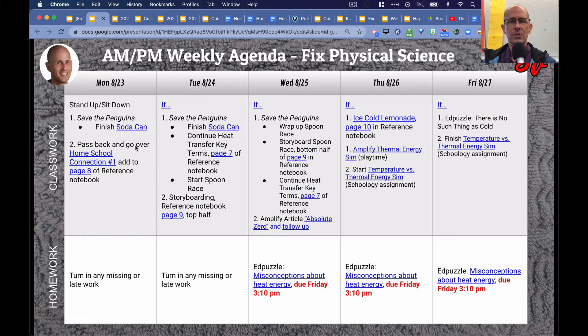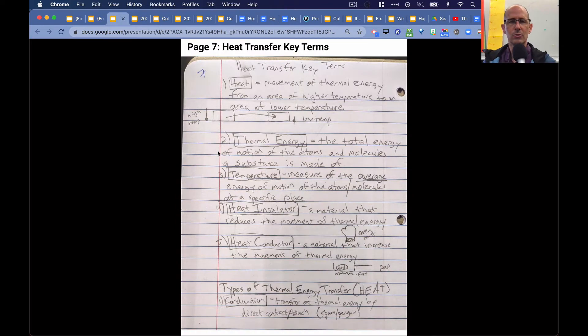Alright, so we finished that Monday and Tuesday. Then we continued to add heat transfer key terms to the reference notebook. So we added temperature, heat insulator, heat conductor, and those were based on the results from the cold soda can demonstration. So some of the wrappings around the cans were better heat insulators than others. The wool sock was the best heat insulator than aluminum foil, and then followed by some of the others.